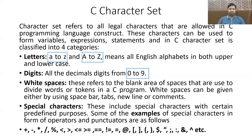White spaces are basically used to create division between two different elements of a C program. For example, if you write A is equal to B plus C, the blank space divides the two components within a single program. The last category is called special characters.